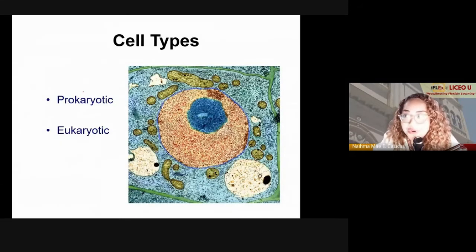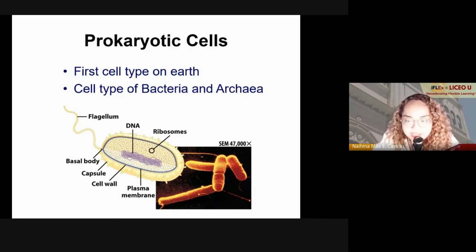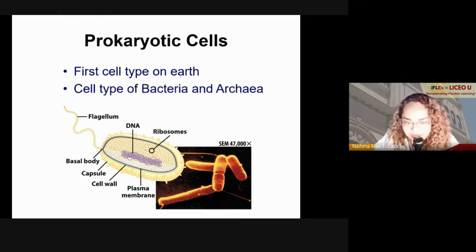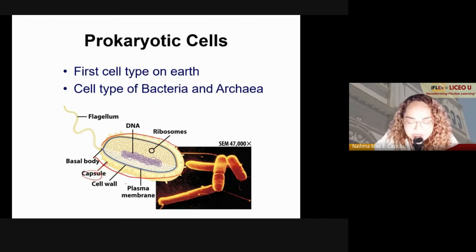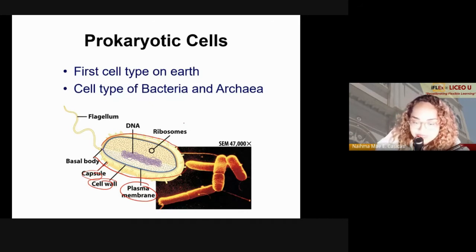There are two cell types: prokaryotic and eukaryotic. Prokaryotic cells are the most primitive and basic types. Looking at a bacterium or archaea, in its outermost layer it has a capsule, then a cell wall for added protection, and a plasma membrane. Inside the prokaryotic cell is the protoplasm, and floating in the protoplasm are ribosomes — which are responsible for protein synthesis.